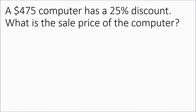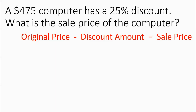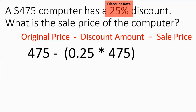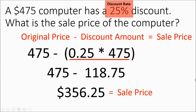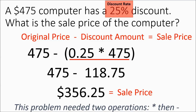A $475 computer has a 25% discount. What is the sale price of this computer? This is going to be a two-operation problem — we're going to multiply to get the discount amount, but then we're going to subtract it from the original price. We do 25% of 475, so 0.25 times 475, and your discount amount is $118.75. Then you subtract that from the 475, and you end up getting $356.25 as your sale price. This was a two-operation problem: you multiplied, then subtracted.